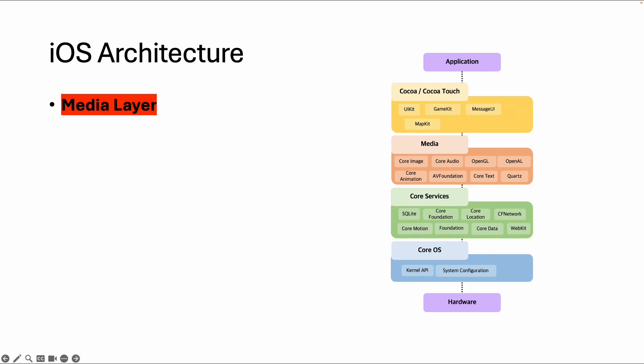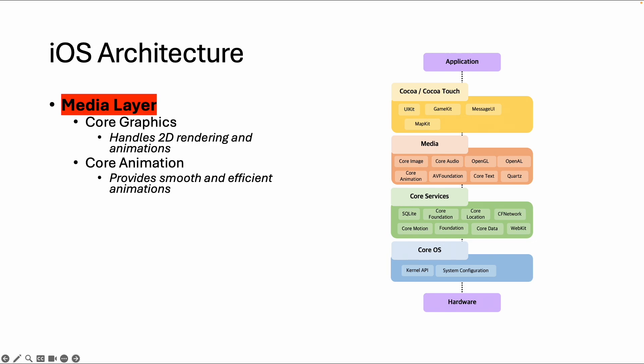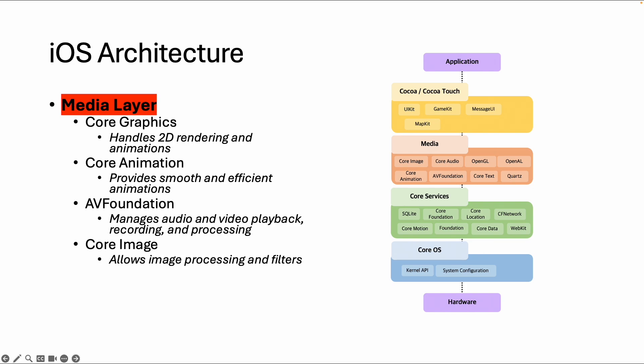The media layer is comparable with the core services layer. It contains frameworks with APIs you can use as a developer if you want to build an app on iOS, macOS, or any other Apple OS. The media layer contains, for example, a Core Graphics framework for rendering and creating 2D animations, a Core Animation framework, an AVFoundation framework for playback, recording, and processing of audio and video, and a Core Image framework for image processing.